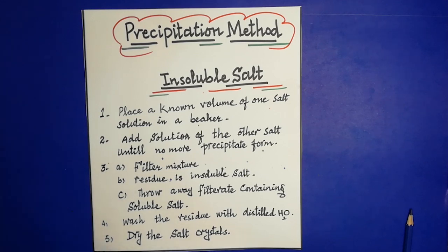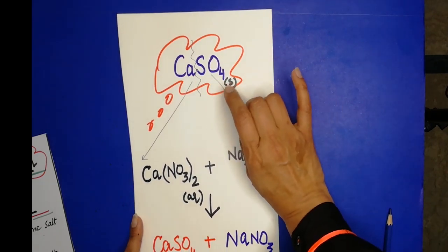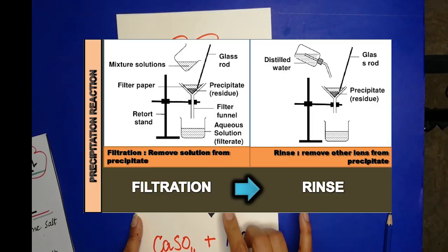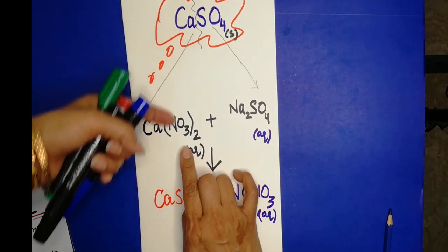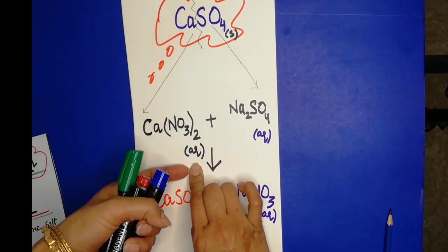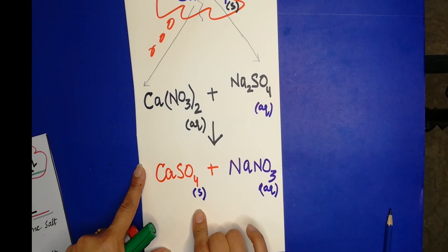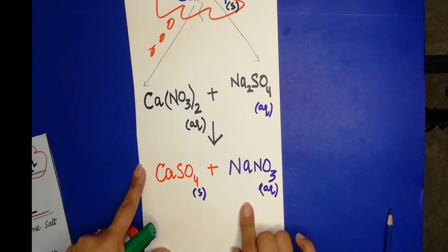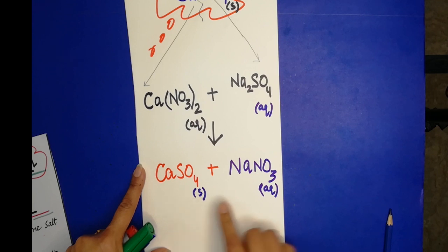Another example: calcium sulfate is prepared by the reaction of two soluble salts. We use calcium nitrate — all nitrates are soluble — as an aqueous solution, and sodium sulfate as the other solution. When mixed, calcium sulfate forms as a solid salt along with a soluble salt in solution. Filter off the insoluble calcium sulfate as the residue, and wash it with distilled water.